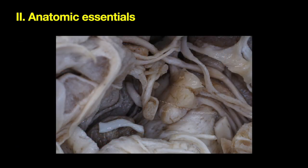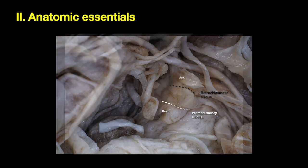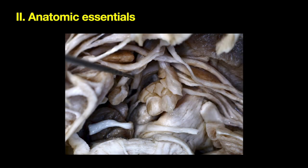This is a lateral view. We can again see the retrochiasmatic sulcus and pre-mammillary sulcus, dividing the areas of the hypothalamus and all the nuclei that are contained within each area.